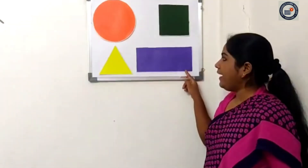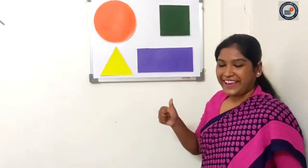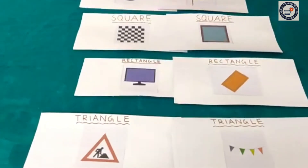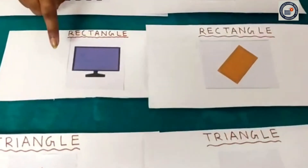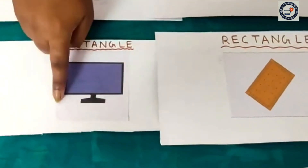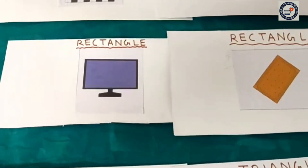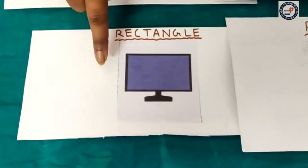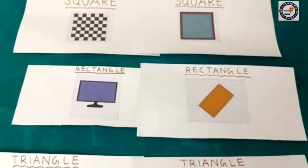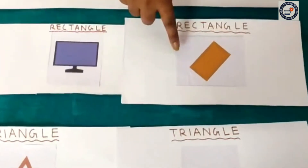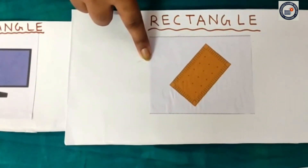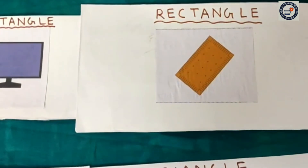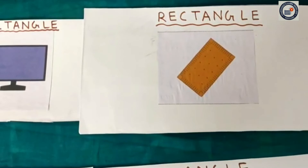Now see on to the table. Where can you see a shape of rectangle? The object related to rectangle, where can you see? Yes, this is the shape of a rectangle. This is a television. We see it at home. The television shape is like a rectangle. Very good. Again, where can you see a shape of a rectangle? Yes, it is here. What is the shape? Rectangle. Two big sides and two small sides. This is a biscuit. We eat it at home.